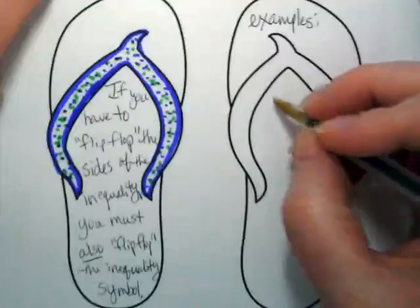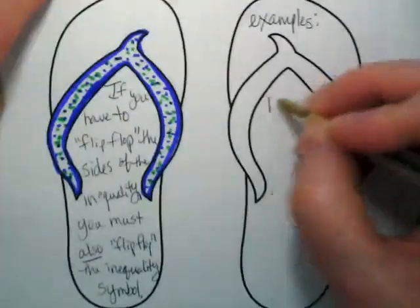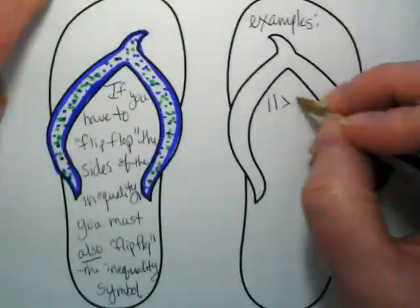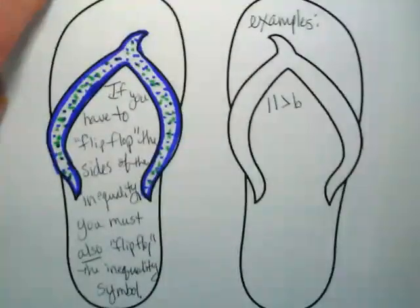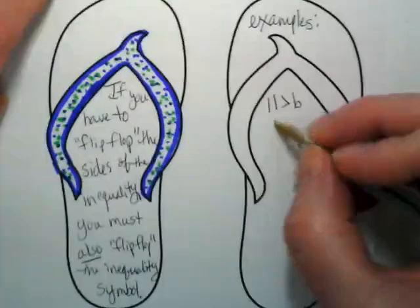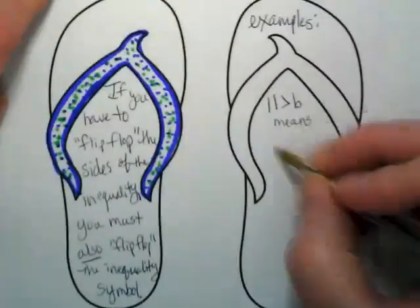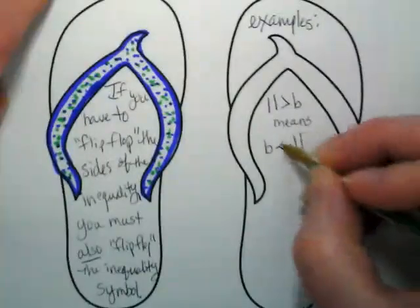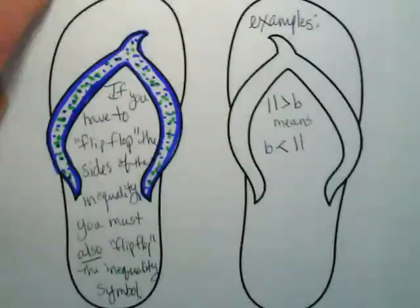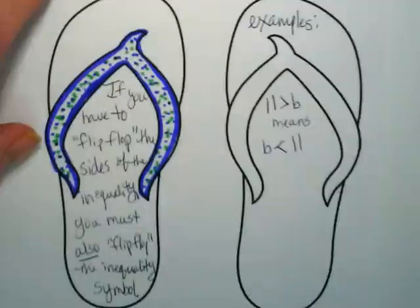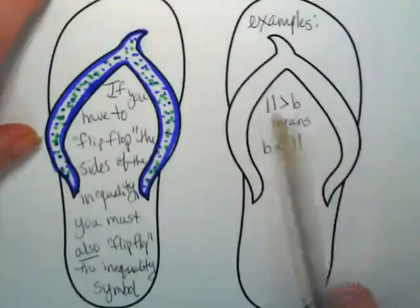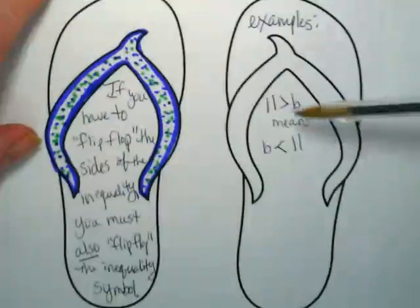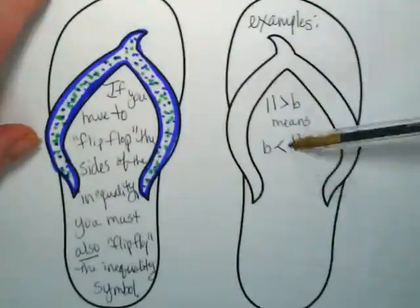Here's some examples. If I have an inequality that shows 11 is greater than B, then I want to flip-flop it and show that that really means B is less than 11. If I'm flipping the outer two to make it so that I have the variable on the left and the constant on the right, I also have to flip-flop the symbol.